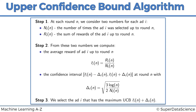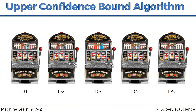This is how the upper confidence bound algorithm works. I won't go into too much detail on this because Hadlan is going to run you through it, and you're going to code this from scratch in R and also in Python in the following lectures. We're going to get to the essence of the algorithm — specifically the intuition: what's actually happening in the background when this algorithm is running.